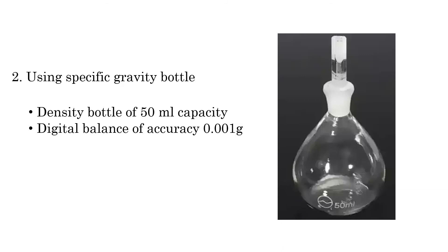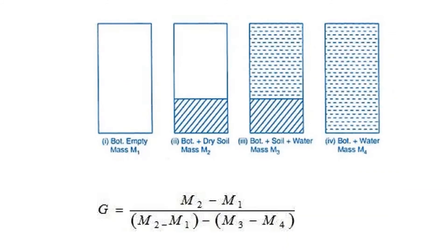We also use a specific gravity bottle — usually with a 50 ml capacity. We follow the same procedure: add the soil sample, then fill with water. The equation is the same, dividing by the equivalent mass of water to get the specific gravity of soil. Both the pycnometer and the specific gravity bottle give the same procedure and result.